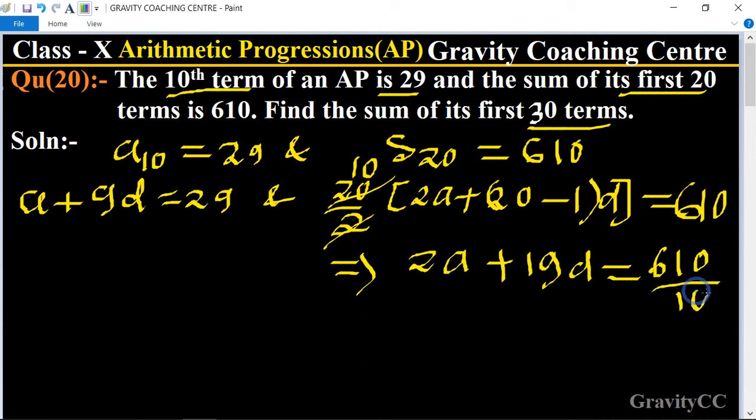So the zeros cancel, implies that 2a + 19d = 61, and this equation is the second equation.